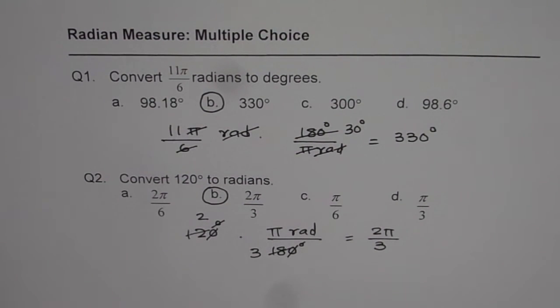So that is how you can convert from radians to degrees and degrees to radians. I hope that helps. Let's move on. Thank you.